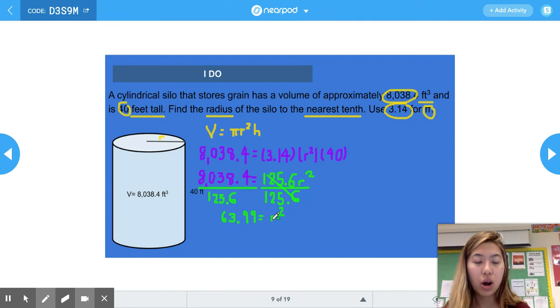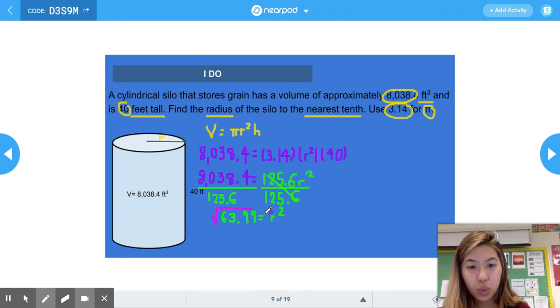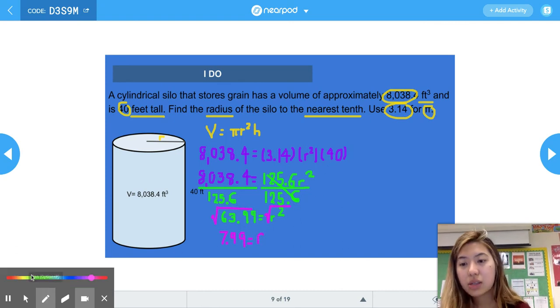To just get r alone, we're going to have to square root both sides of the equation. The square root of 63.99, when rounded to two decimal places, is 7.99. But from the problem, it says we have to round to the nearest tenth, so we're rounding to one decimal place.